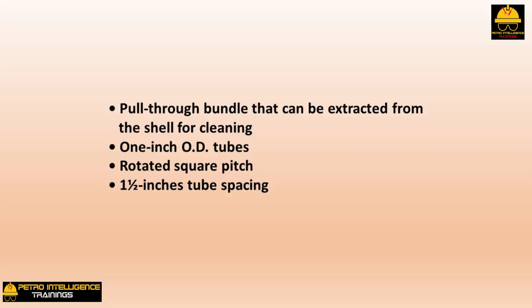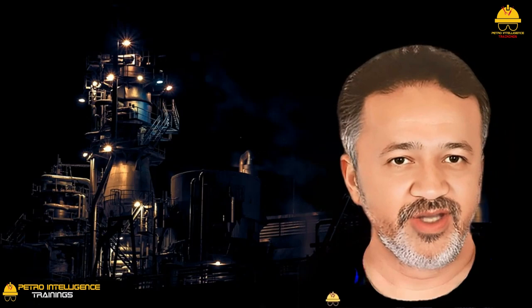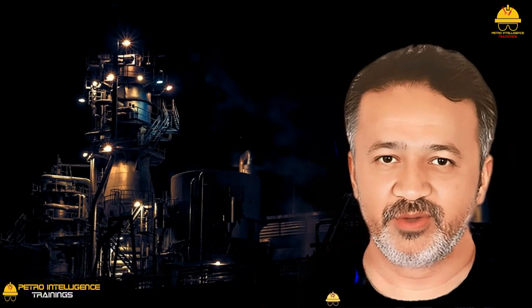The client was not pleased with the cleaning result. The correct design for this service is: a pull-through bundle that can be extracted from the shell for cleaning; 1-inch outer diameter tubes; rotated square pitch; 1.5-inch tube spacing. A fixed tube-sheet exchanger in a refinery pre-condenser service for a vacuum tower is essentially a throwaway item. One operator's replacement for a 60-inch ID shell to the above specifications was $1,300,000 in 2013 — not a happy situation.